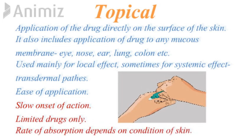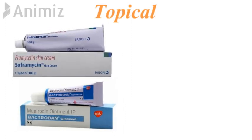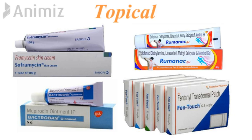Next is topical route of administration, in which the drug is directly applied on the surface of the skin. It also includes application to any mucous surface like eyes, nose, ear, lungs, and colon. It is usually for local effects, but sometimes also for systemic effects — for example, transdermal patches. Limitations include slow onset of action, limited number of drugs can be given by this route, and absorption rate is dependent on skin condition. Topical dosage forms include creams, ointments, gels, and transdermal patches such as fentanyl for systemic delivery.